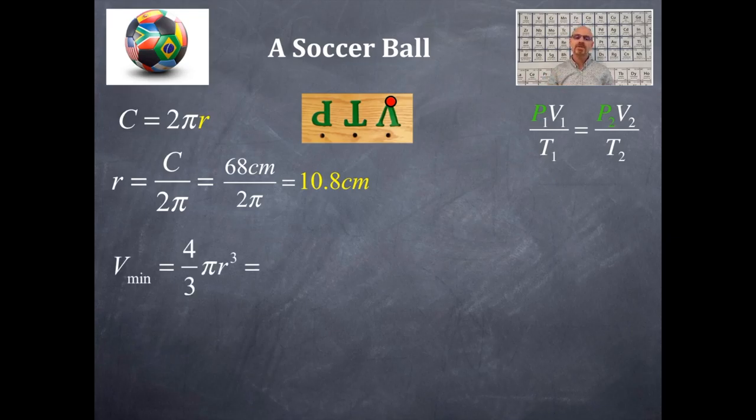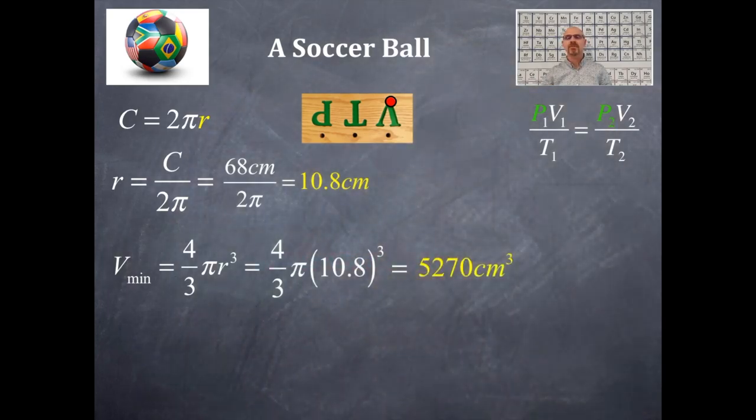The volume, that's the minimum volume that must be had, and this is the volume of a sphere that is 4 thirds pi r cubed. I'm going to plug in the radius into this and then solve for the volume that's necessary, the minimum volume that's required. And that minimum volume is 5,270 cubic centimeters.